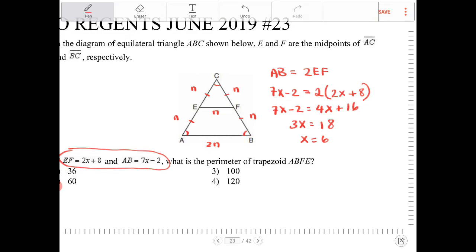Well, if X is equal to 6, then I know that AB will equal to 7 times 6 minus 2. 7 times 6 is 42. 42 minus 2 is 40. If AB is 40, EF is going to equal to 20. And we also know that by substituting 6 back into the equation for EF. 2 times 6 plus 8 is 20. So AB is 40, EF is 20.